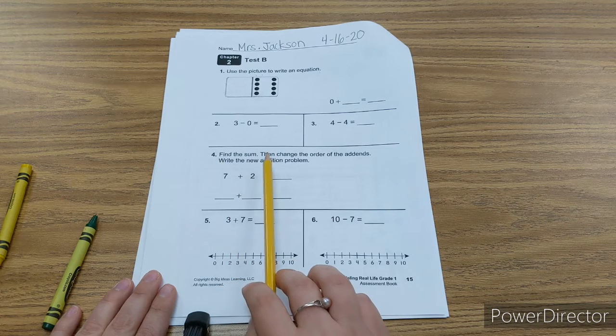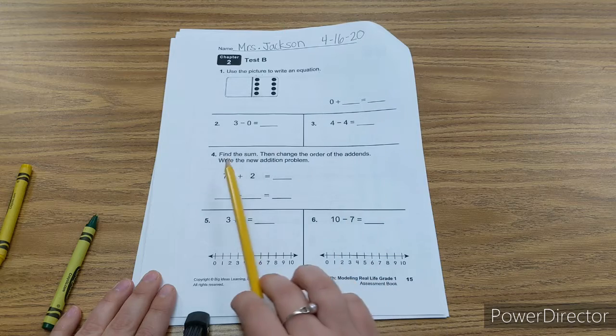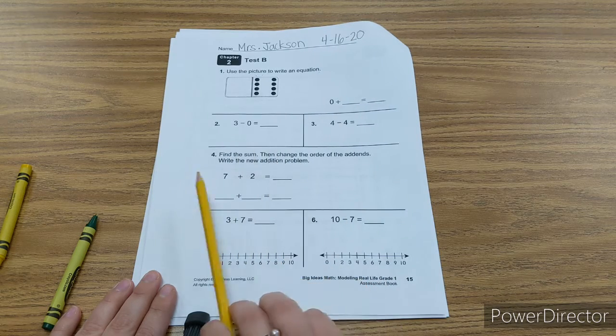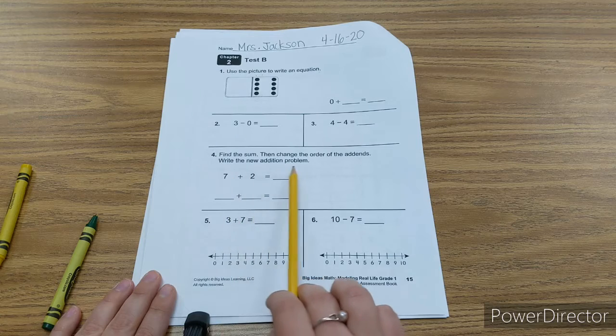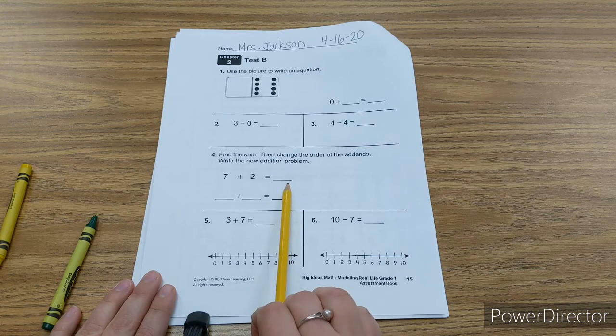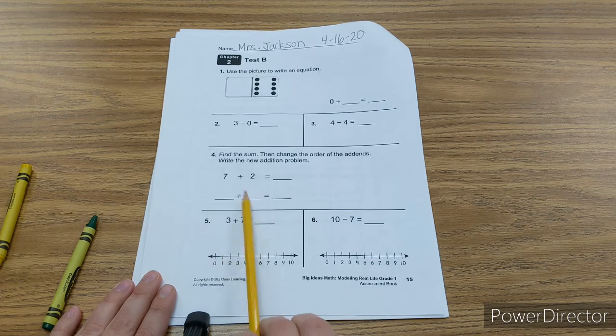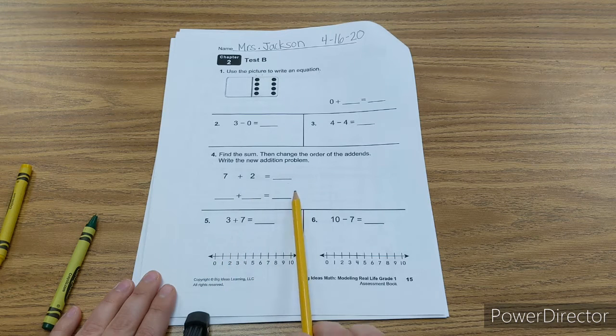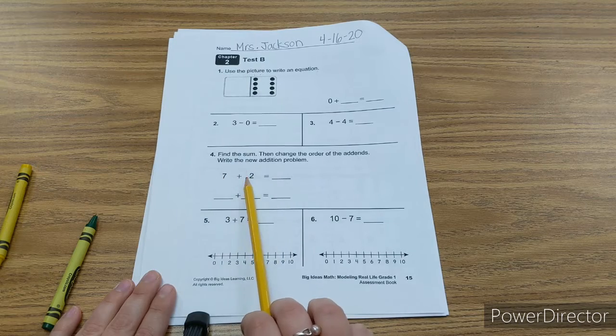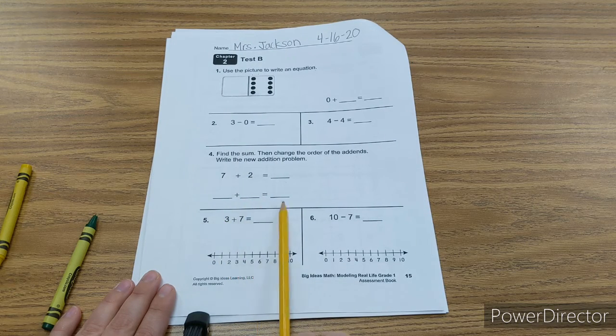Find the sum, then change the order of the addends to write the new addition problem. Addend, addend, addend, sum. And so you need to write your new addends and write your sum. Addend, addend, sum, part, part, whole. Addend, addend, sum, part, part, whole.